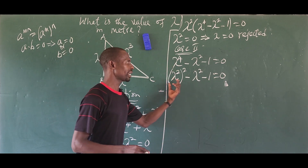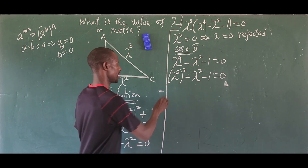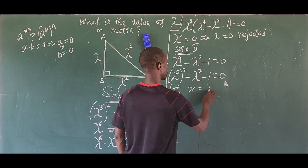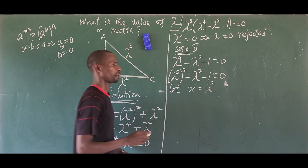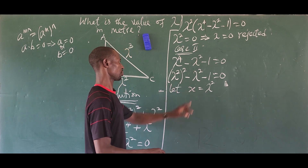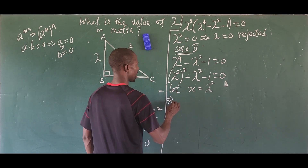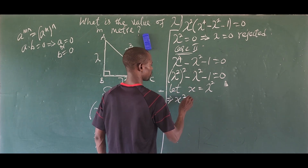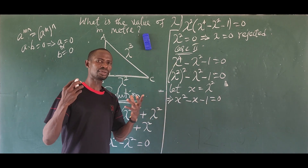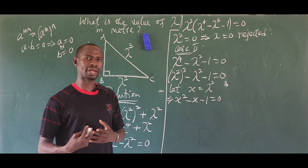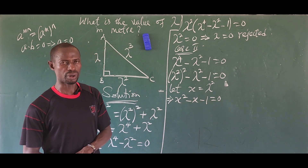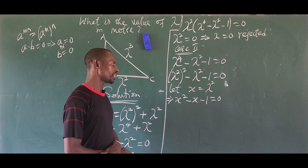Let x be equal to lambda squared. Substituting this, lambda to the power of four becomes x squared, so we now have x squared minus x minus one equals zero. We've reduced the fourth-degree polynomial to a second-degree polynomial — a quadratic equation — which we can solve using the formula method.